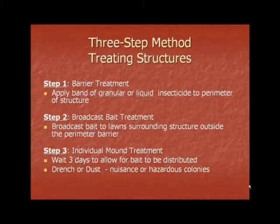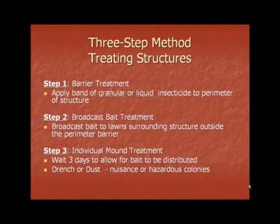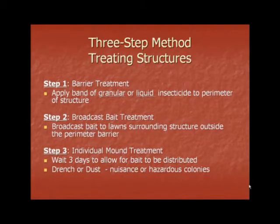The three-step method for treating structures involves: Step one, a barrier treatment — apply a band of granular or liquid insecticide to the perimeter of the structure. Step two, broadcast bait — use a broadcast bait on lawns surrounding the structure outside the perimeter barrier. Step three, individual mound treatment — wait three days for the bait to be distributed, then use a drench or dust to treat nuisance or hazardous colonies. This method is good for treating schools, nursing homes, or other structures.